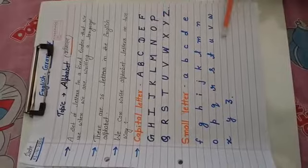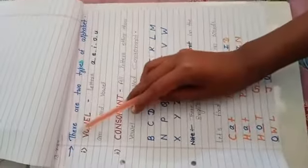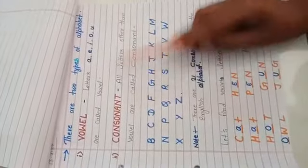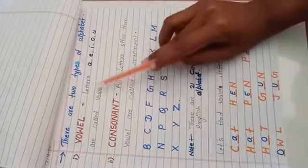In the next page you can see how many types of alphabet. I have written there are two types of alphabet. First is vowel and second is consonant. Vowel letters